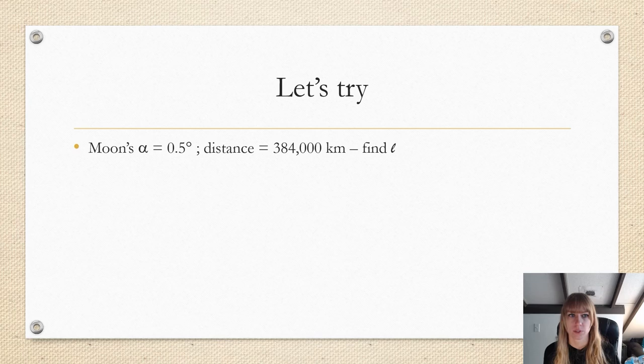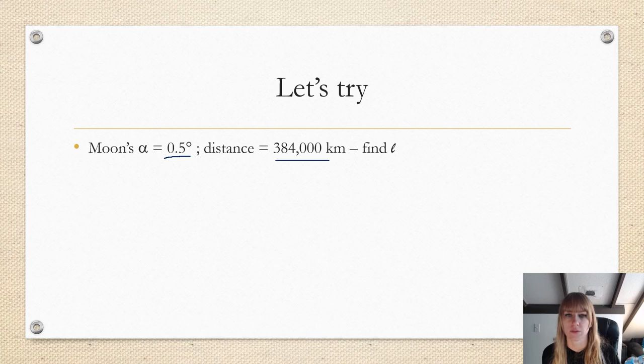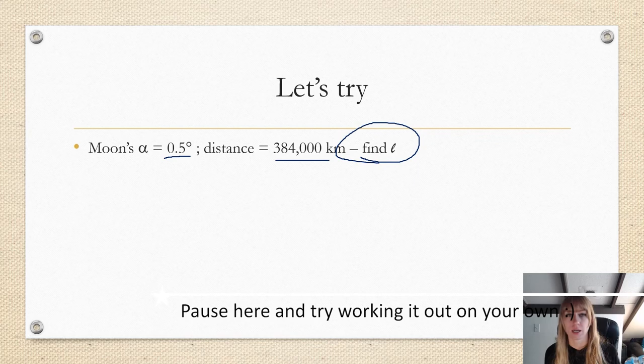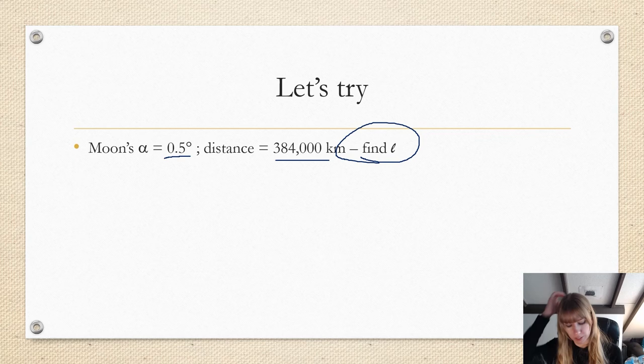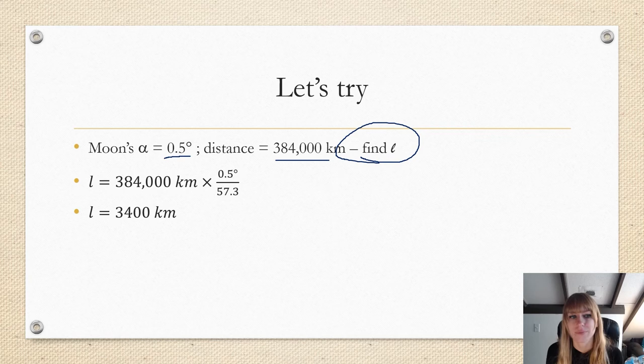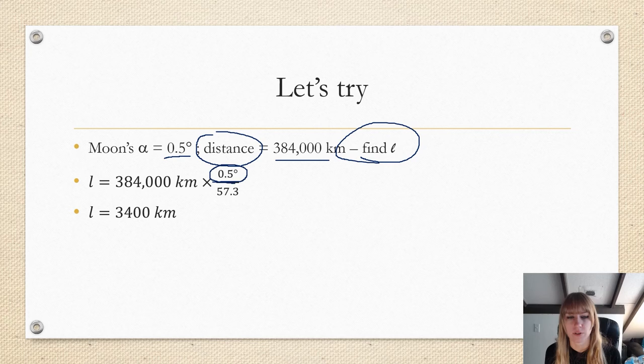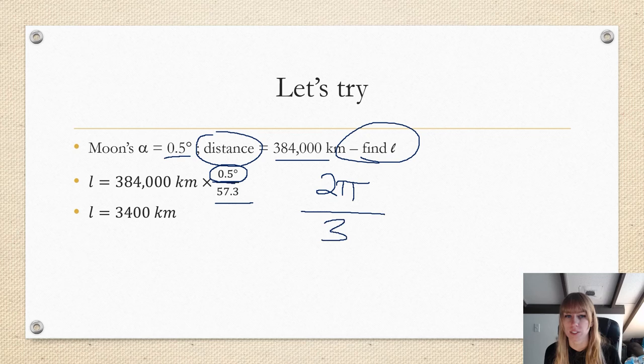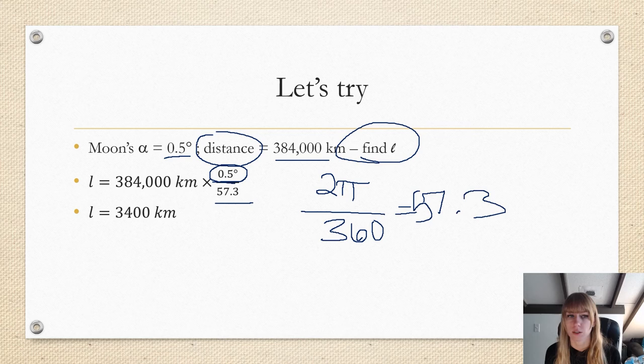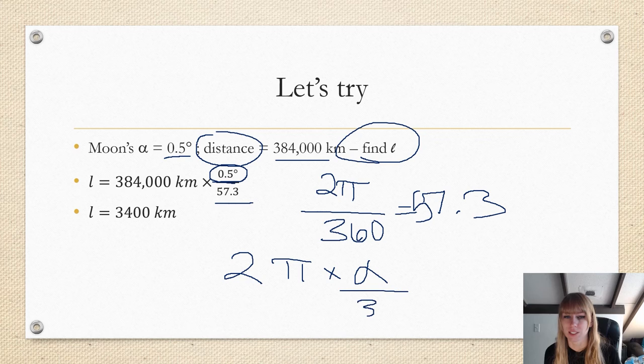So let's try it ourselves. I'm going to give you a couple minutes to try to solve this problem. Your alpha is 0.5 degrees and the distance from the Earth to the Moon is 384,000 kilometers, and I want you to find L. So I want you to pause it and take a couple minutes and try to do it first, and then come back and we'll go through it. We're going to go ahead and go on with it. L equals 3,400 kilometers. That's your answer. How do we get it? L equals 384 kilometers, or distance, times 0.5 over 57.3, because remember 2π over 360 equals 57.3. So instead of going 2π times alpha over 360, we divide those two and you just take alpha over the remainder, which is 57.3. So doing that together, you get 3,400 kilometers.